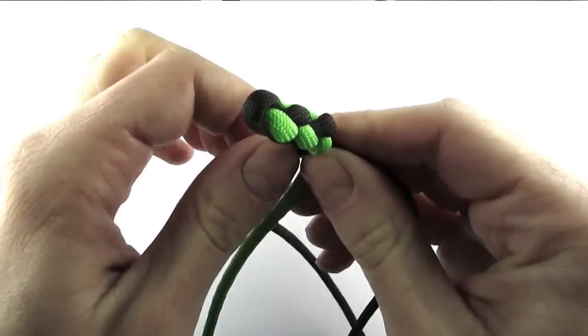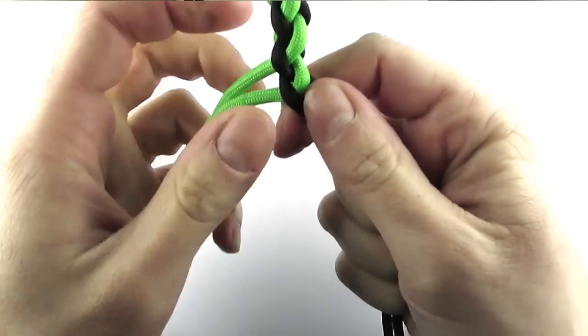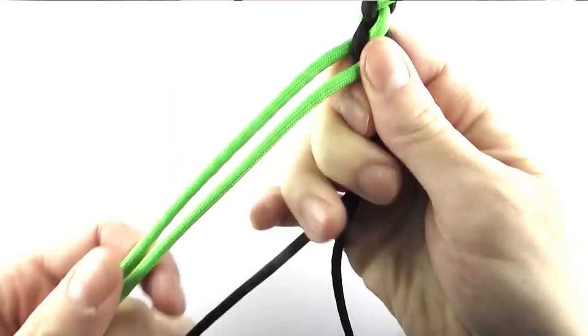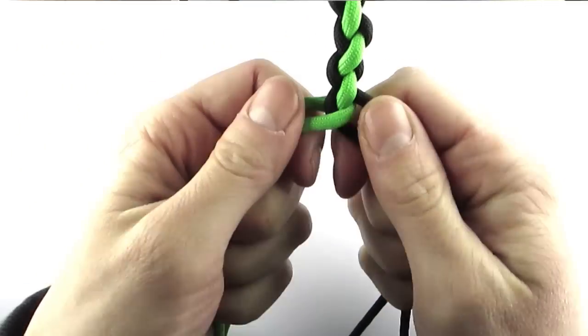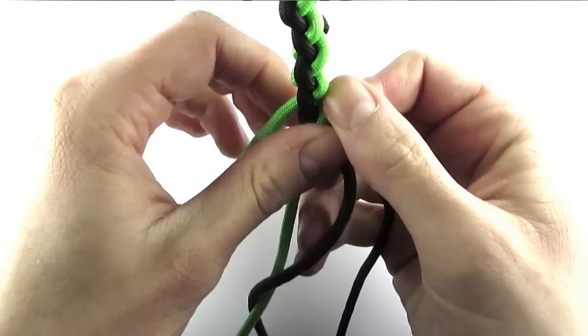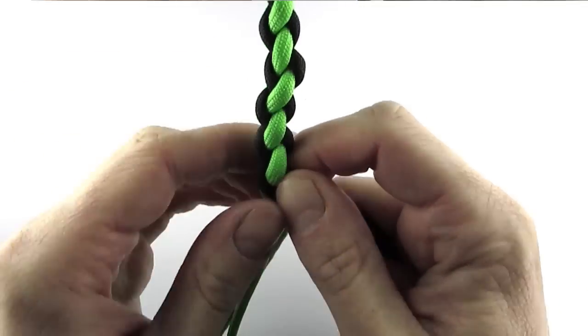This way we alternate sides and we are always taking the top cord on each of the sides. We place it through the opposite cords and then we finish always at the bottom of the other side.